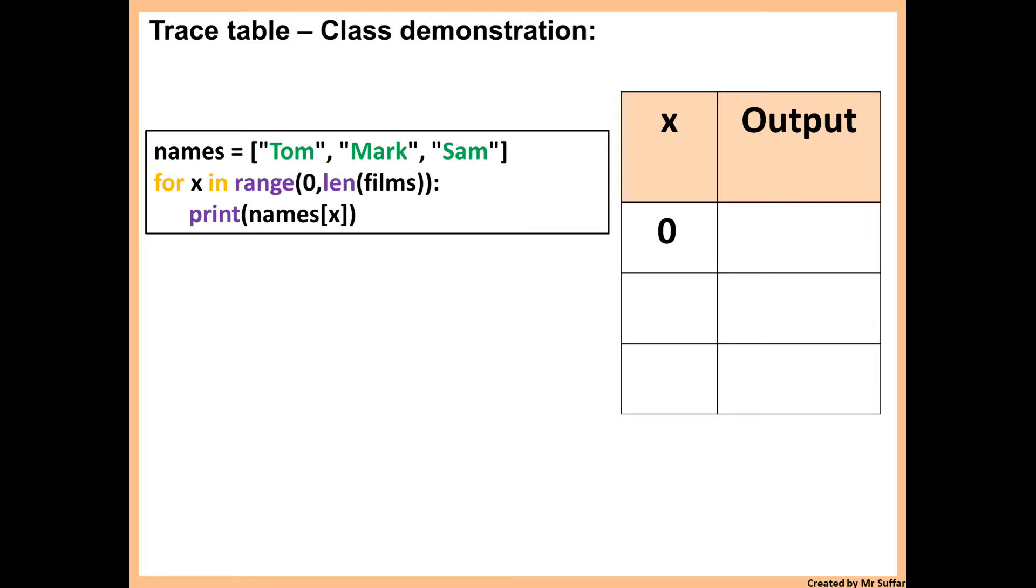So first x is going to be zero because we're going from zero to length of films. Then it says print names x. So names zero, index zero is Tom.